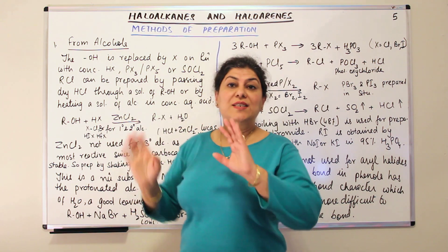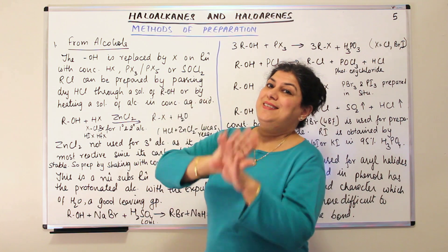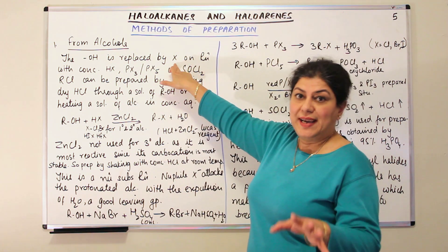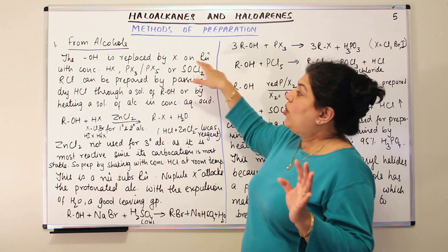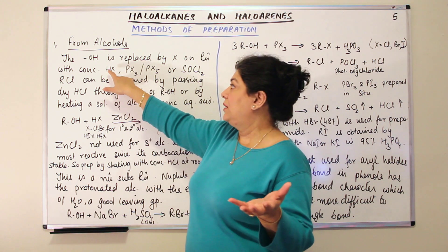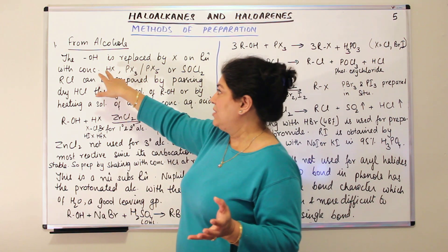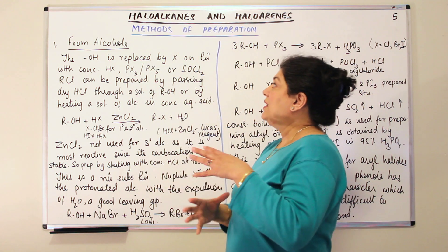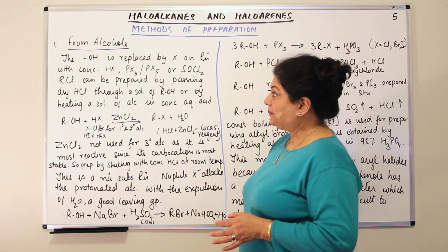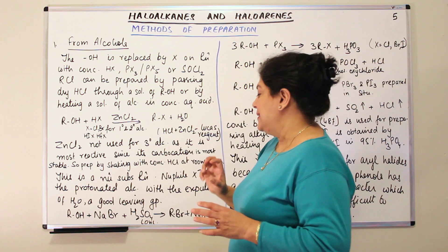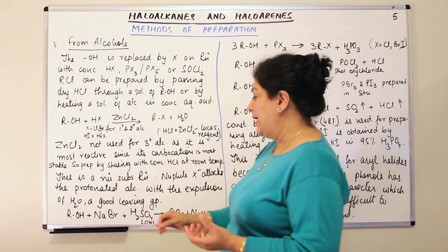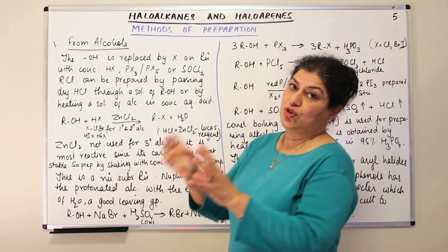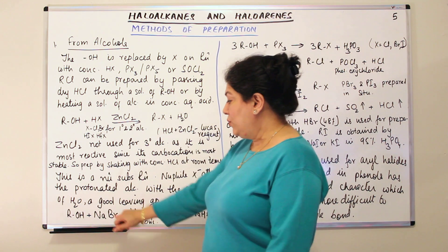So the OH group of an alcohol is replaced by a halogen and when this is done you can prepare haloalkanes from alcohols. So the OH group is replaced by X where X stands for a halogen which can be chlorine, bromine, iodine on reaction with concentrated halogen acid, hydrogen chloride or hydrogen bromide, or it can be prepared from phosphorus trihalide or phosphorus pentahalide. And it can also be prepared from thionyl chloride that is SOCl2. Besides this, sodium bromide or potassium iodide or potassium bromide can also act as the source of the bromine or the iodine which has to be exchanged instead of the acid. You can use these also.